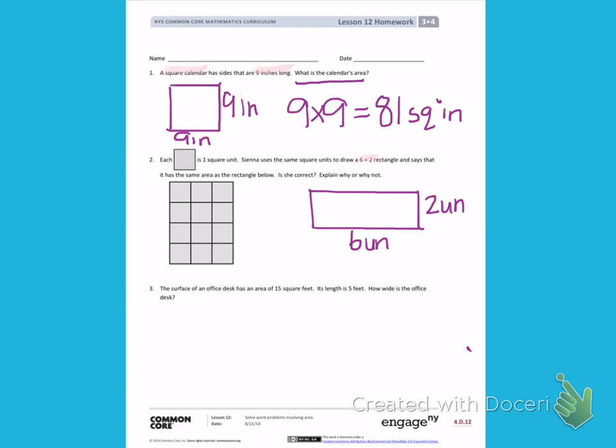To find the area of that rectangle, I need to multiply 2 times 6. 2 times 6 is 12. Since it's the area, I need to also write square units.